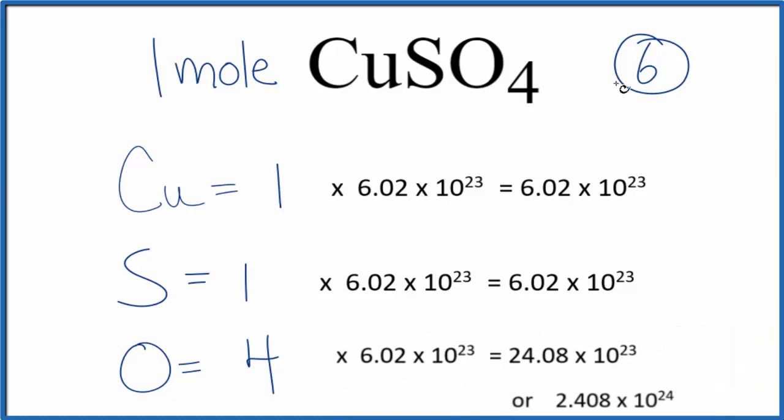If you wanted to know how many total atoms, you would multiply 6 by Avogadro's number. This is Dr. B looking at the number of atoms in CuSO4, copper 2 sulfate. Thanks for watching.